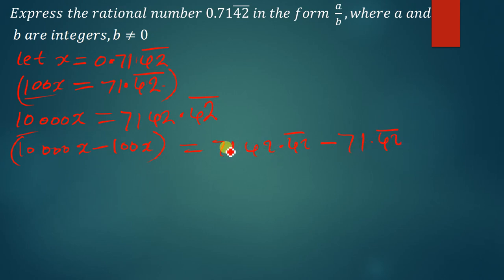After doing the subtraction, 10,000 minus 100 will give us 9,900x. This is going to be equal to, so you have also to subtract 7142.42 minus 71.42 and this will give us...